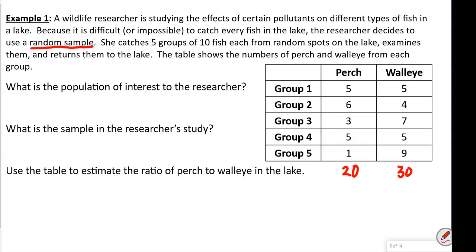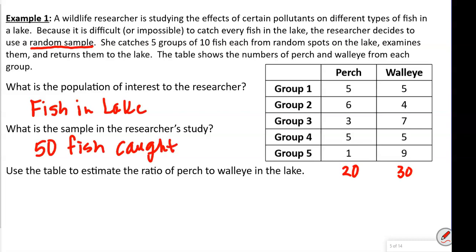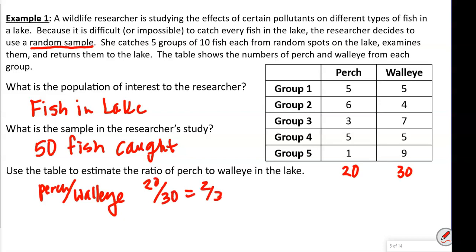It asks: what is the population of interest to the researcher? The population of interest is the fish in the lake. What is the sample in the researcher's study? The sample is the 50 fish that were caught. Then it says use the table to estimate the ratio of perch to walleye: 20 over 30, which equals two-thirds, or written as a ratio, two to three.